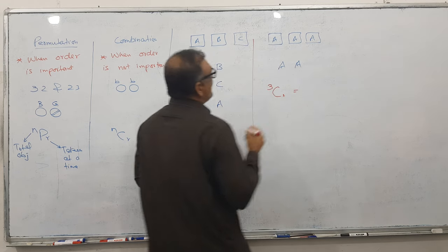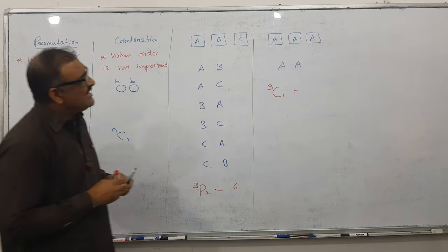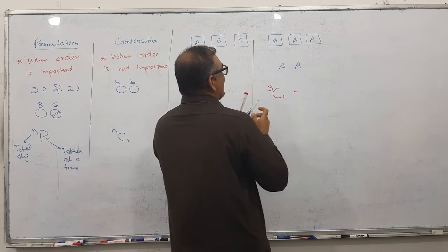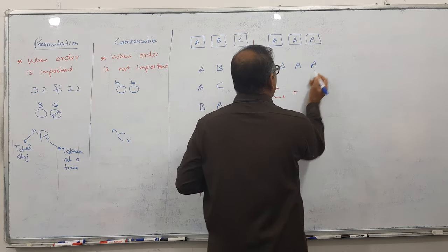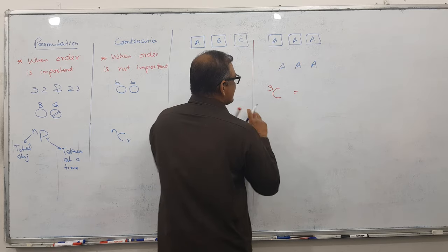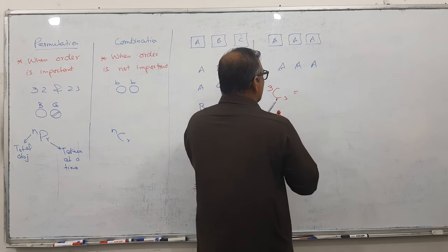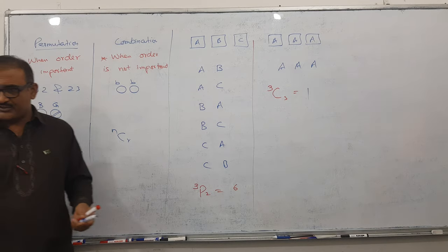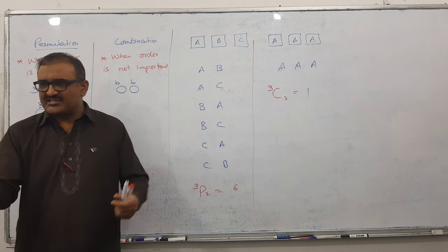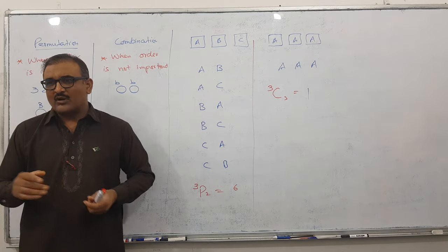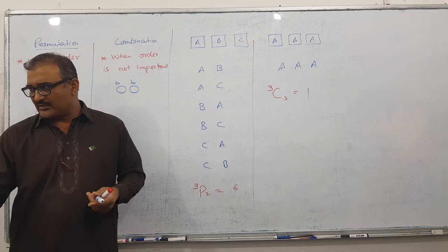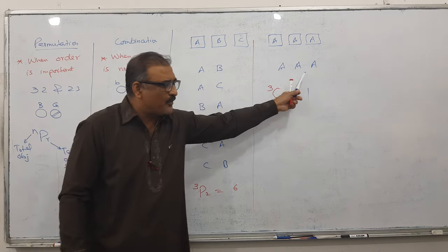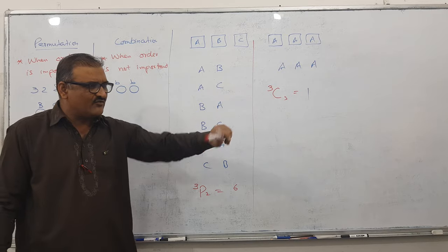Wait a minute. If I take all three pictures and want to fix all of them, the answer is 3C3 which gives one. And we have only one option. Three pictures, I have to pick all - only one arrangement. And we have one option only. Can we produce more options? No, because there are similar pictures.